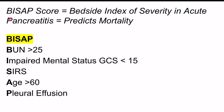The BISAP score — Bedside Index for Severity in Acute Pancreatitis — predicts mortality. The mnemonic: B for BUN greater than 25, I for impaired mental status with GCS less than 15, S for SIRS (systemic inflammatory response syndrome), A for age greater than 60, and P for pleural effusion.